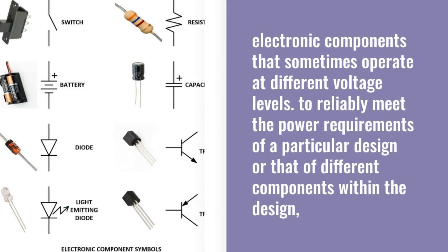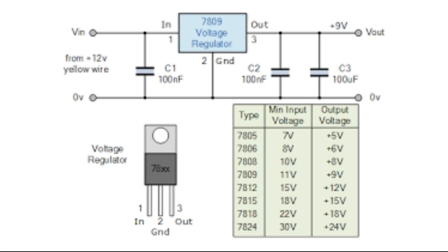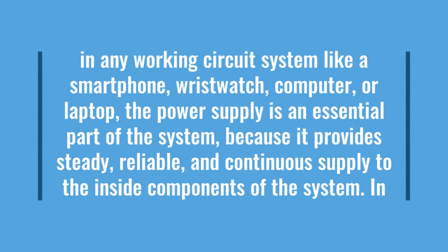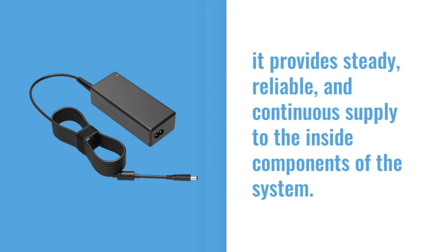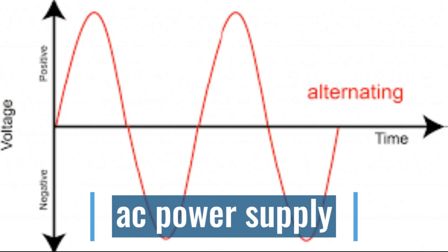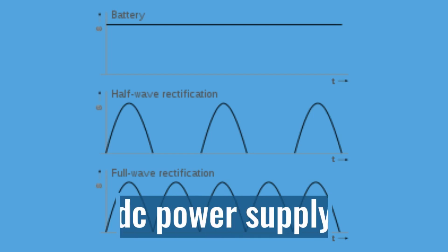Electronic devices are usually made up of diverse electronic components that sometimes operate at different voltage levels. To reliably meet the power requirements of a particular design, voltage regulators are employed in the power supply unit to regulate the voltage at the main source to what is needed across different sections of the device. For instance, in any working circuit system like a smartphone, wristwatch, computer, or laptop, the power supply provides a steady, reliable, and continuous supply to the inside components. In this tutorial we are going to discuss an overview of different types of voltage regulators and their working.